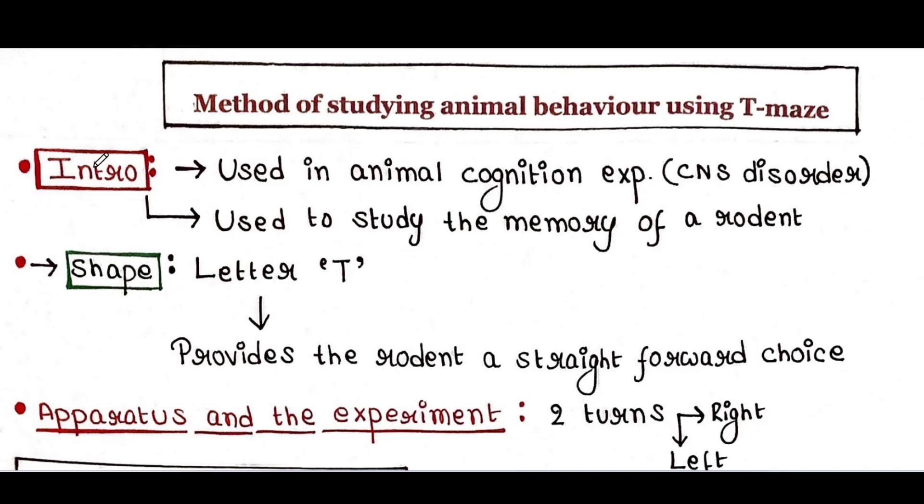In behavioral science, T-maze is used in animal cognition experiments, especially for CNS disorders—central nervous system disorders. Here, cognition refers to how animals behave, understand, sense things, and how conscious they are.